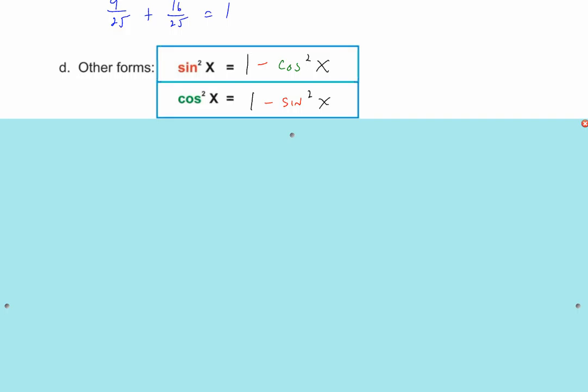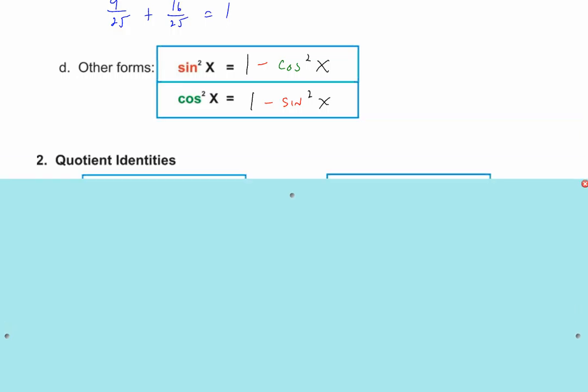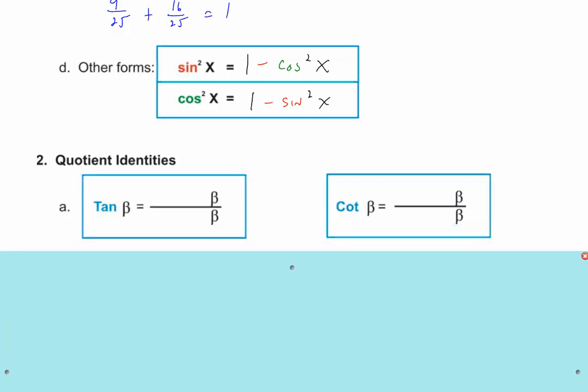If you were to get an identity problem on the ACT or SAT, I'm thinking 75% of the time it's going to involve this trig identity: sine squared x plus cosine squared x equals 1. This is the main one and everyone should know it — definitely memorize it, and know the other forms too.